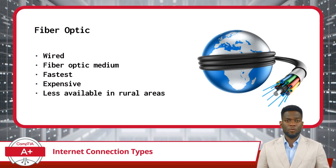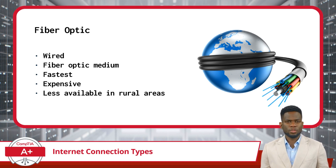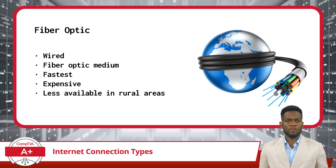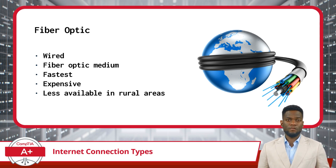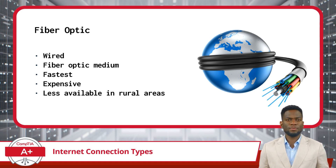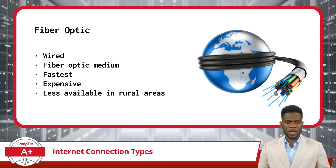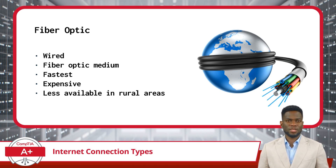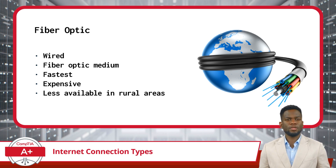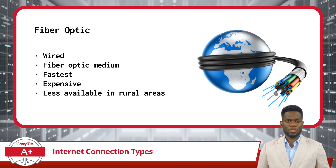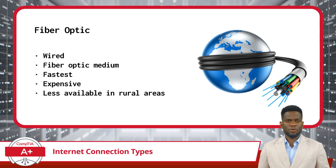Fiber optic is a type of wired Internet connection that utilizes fiber optic cables to transmit data. It is considered one of the fastest and most reliable forms of Internet connectivity available today. Fiber optic cables are made of thin strands of glass or plastic, known as optical fibers, designed to transmit data using pulses of light. Fiber optic connections can be relatively more expensive and are commonly deployed by ISPs in urban areas.